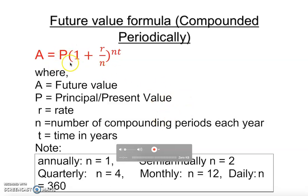This is the formula - most probably is going to be given to you during the test. Future value, A, is equal to P times open parenthesis one plus r over n, close parenthesis, to the power nt. This is called the future value formula, where A is the future amount, P is the principal or present value, r is the rate.